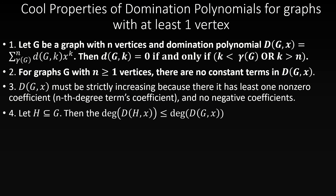The fourth property is: let G be a graph and H be a subgraph of G. Then the degree of the domination polynomial of G is greater than or equal to the degree of the domination polynomial of H. This is because the degree of the domination polynomial of any graph is the number of vertices in that graph, as that's the size of the largest dominating set. If H is a subgraph of G, it has at most as many vertices as G, so its domination polynomial has degree at most equal to that of G.